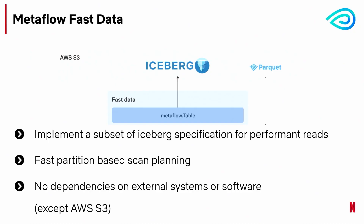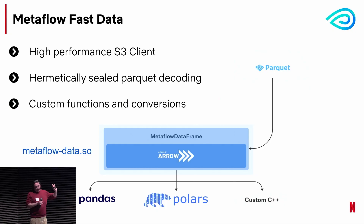Let's talk about the first layer. We've implemented a subset of the Apache Iceberg spec. The Iceberg team has done an excellent job making a well-defined spec, so you don't necessarily need to use the PyIceberg client — you can implement your own if you have special requirements as we did. It was designed for fast partition-based scan planning. We only implement the part of the spec we know we can do extremely well and quickly. It has no software dependencies; we roll our own Avro reader that doesn't require PyAvro. We do depend on AWS S3, and we've also built a high-performance S3 client, which is available in Metaflow open source — anybody can use it.